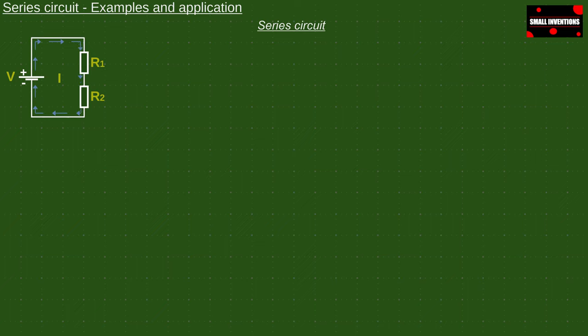Series circuit can be seen as a necklace. Each part of the necklace, although different, is connected to its neighbor in a row. The total weight of the necklace is the sum of all its individual parts.